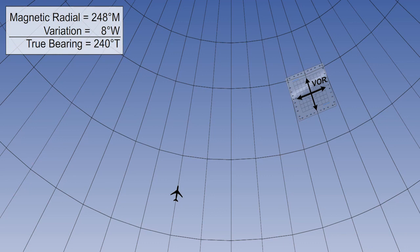When the bearing is measured at the ground station, there is no problem. We will have to apply variation if the bearing is magnetic and we wish to plot in true. But, once that correction has been done, we simply put our protractor over the ground station and plot the bearing. The line represents the correct radio path.